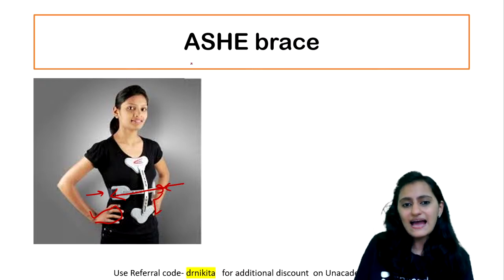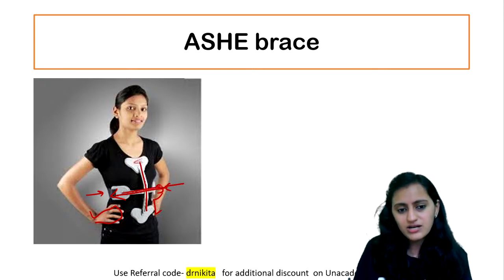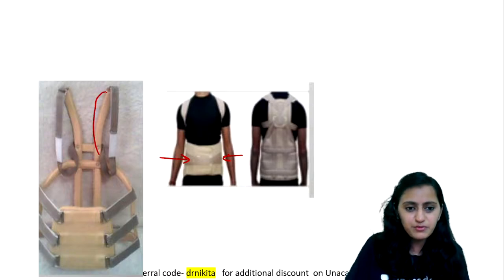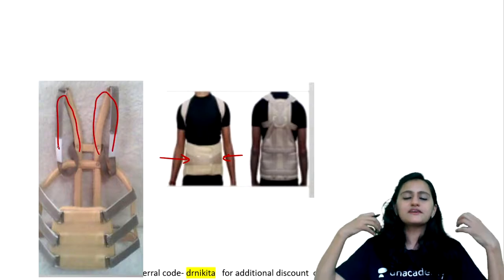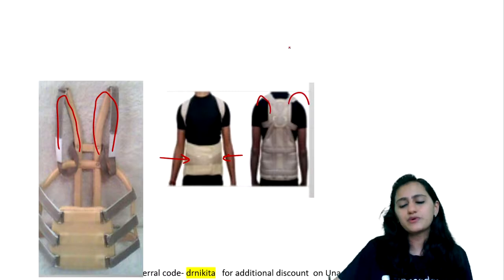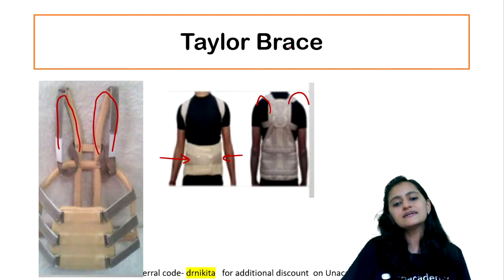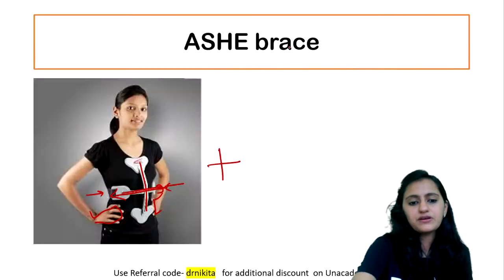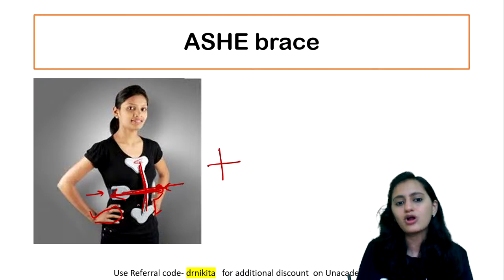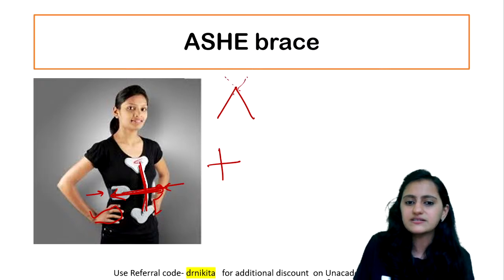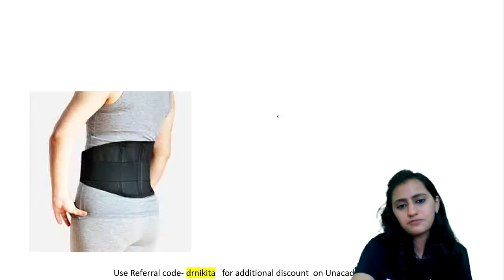The difference: your Ash brace has a cross at the dorsal lumbar junction — when you write A, you cross it, so it's like an X. The crossing one is Ash brace. The other one is Taylor brace — it comes from the collar and from the shoulders. So crossing is Ash brace, and the shoulder-extending version is Taylor brace. Both are used for dorsal lumbar immobilization.